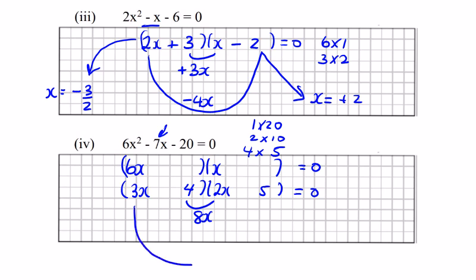5 will give me 15x. And the more you practice them, you can see what works and what doesn't. So minus 15 plus 8 gives me minus 7. So I'm gonna have minus 5 and plus 4. So my solutions are: in the first bracket we'll end up with minus 4 over 3, and the second bracket plus 5 over 2.